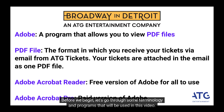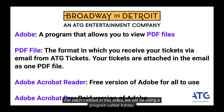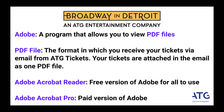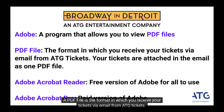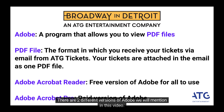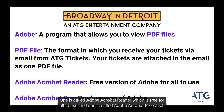Before we begin, let's go through some terminology and programs that will be used in this video. For each method, we will be using a program called Adobe, which allows you to view PDF files. A PDF file is the format in which you receive your tickets via email from ATG Tickets, meaning your tickets are attached as one PDF file. There are two versions: Adobe Acrobat Reader, which is free, and Adobe Acrobat Pro, which is a paid program.